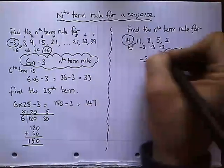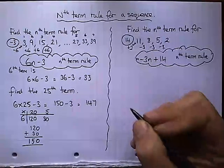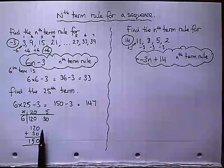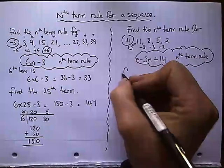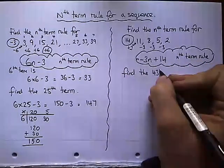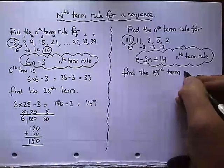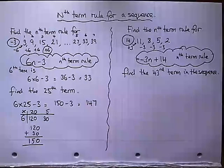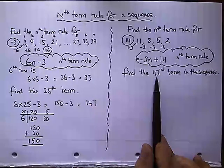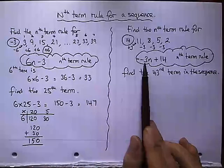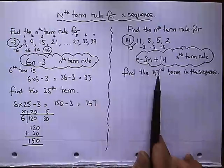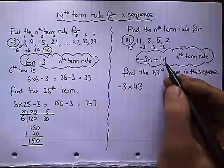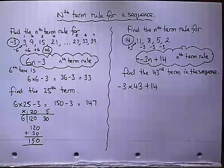Now, I'm going to ask you to work out a particular term in the sequence. Remember, we can use this nth term rule to work out that term, just like we did last time for the 25th term. So find the 43rd term in the sequence. So we've got to take our n, replace it by 43. So this is minus 3 times n. So instead, it becomes minus 3 times 43. So we get minus 3 times by 43, don't forget the plus 14.